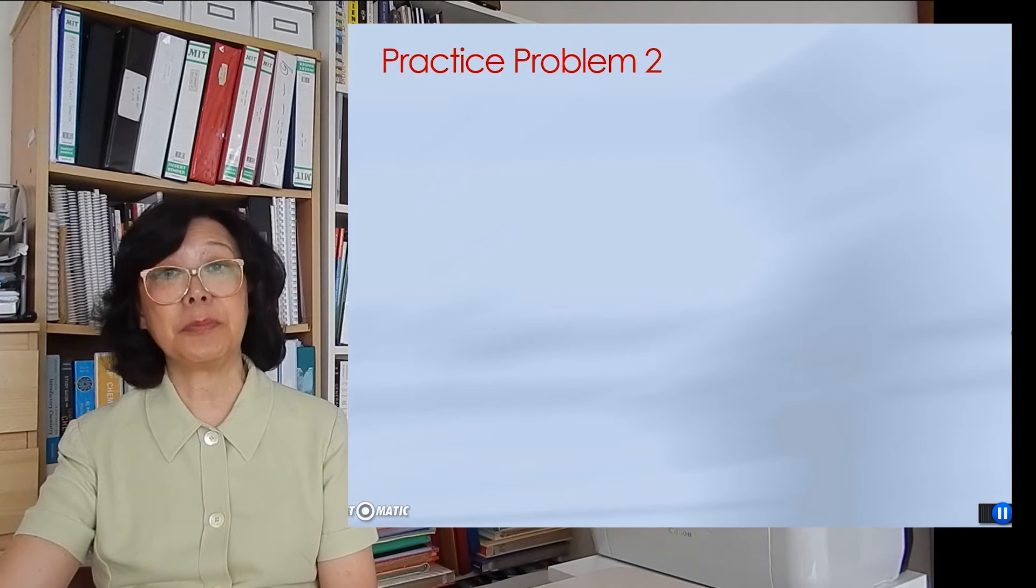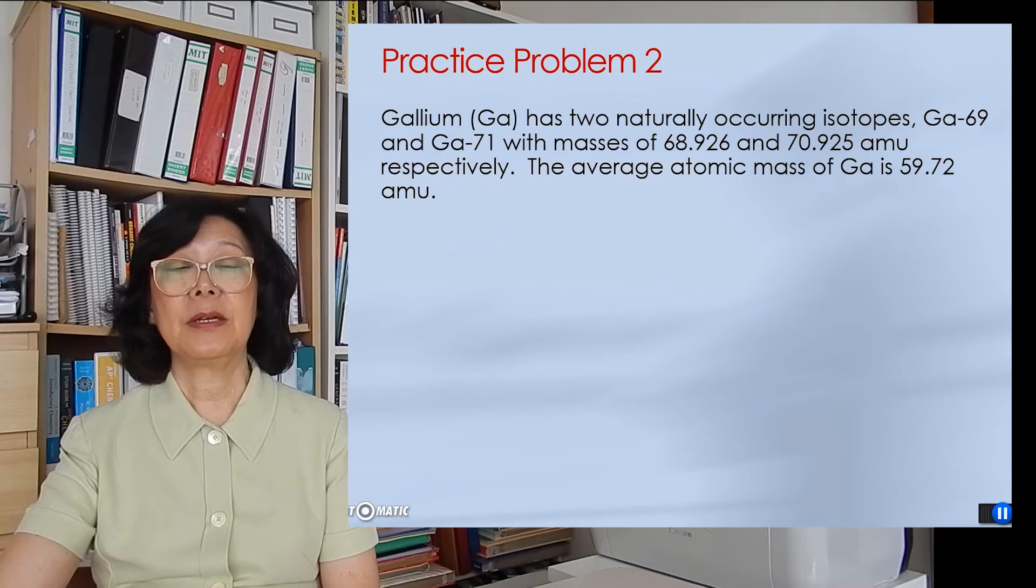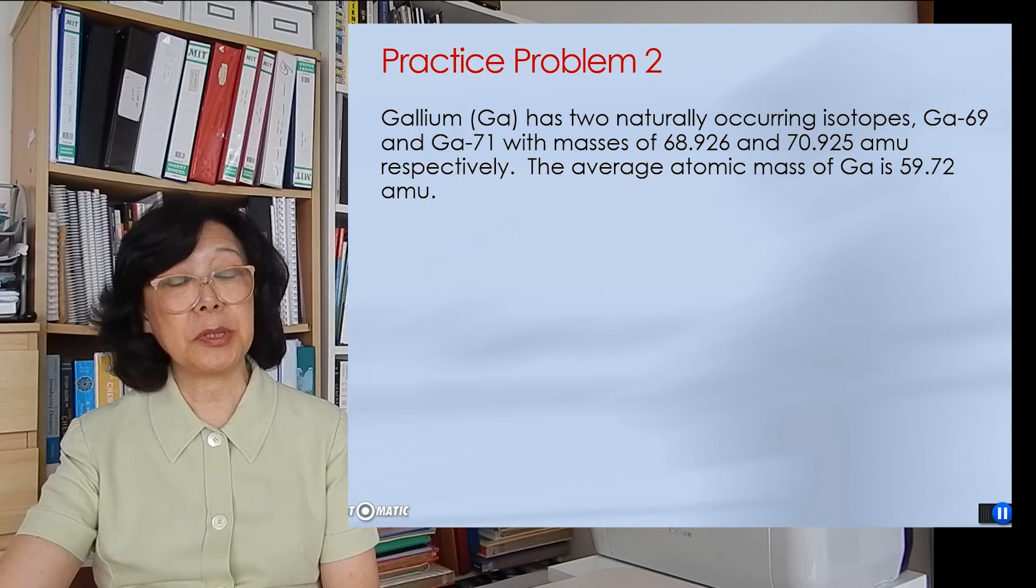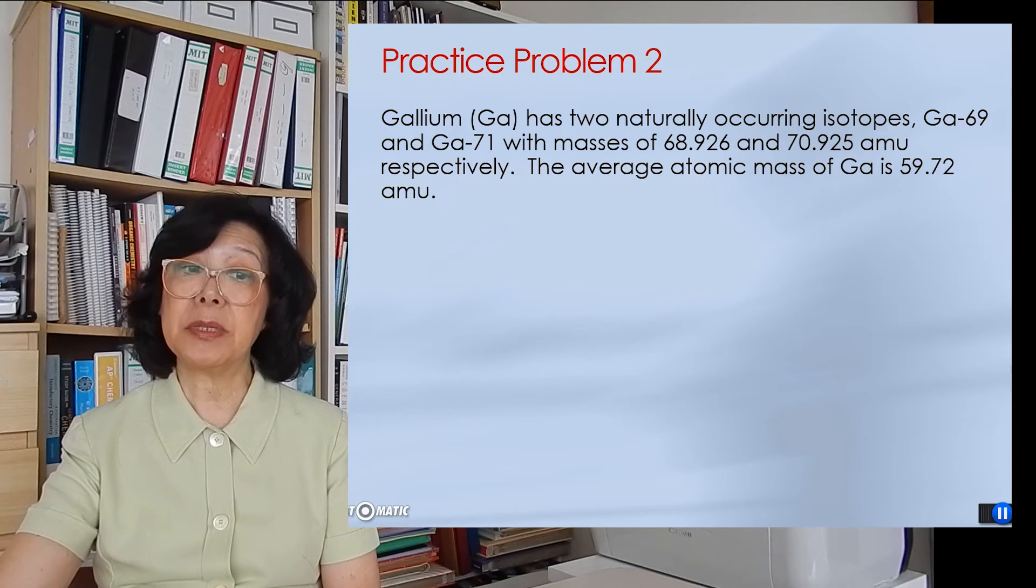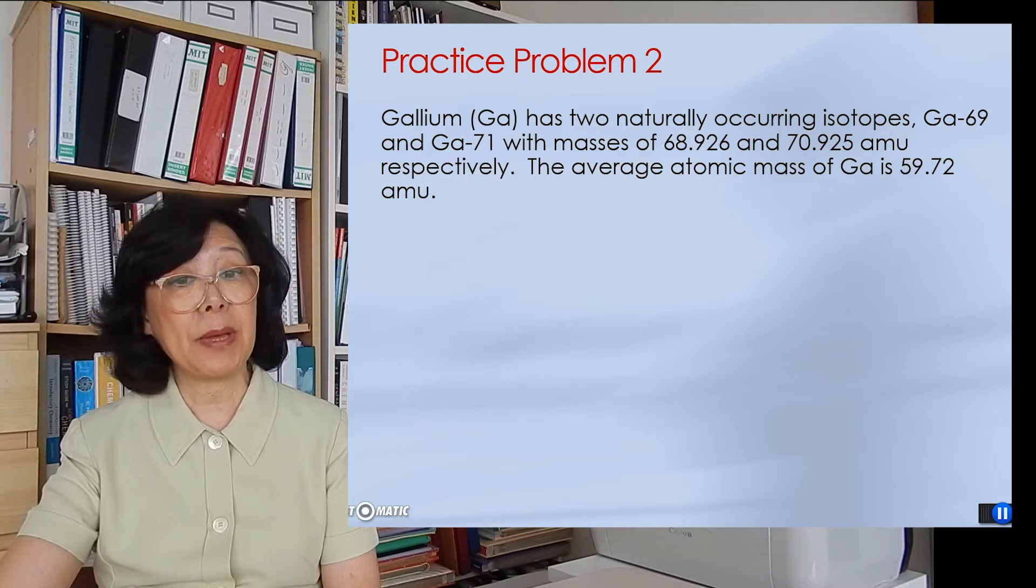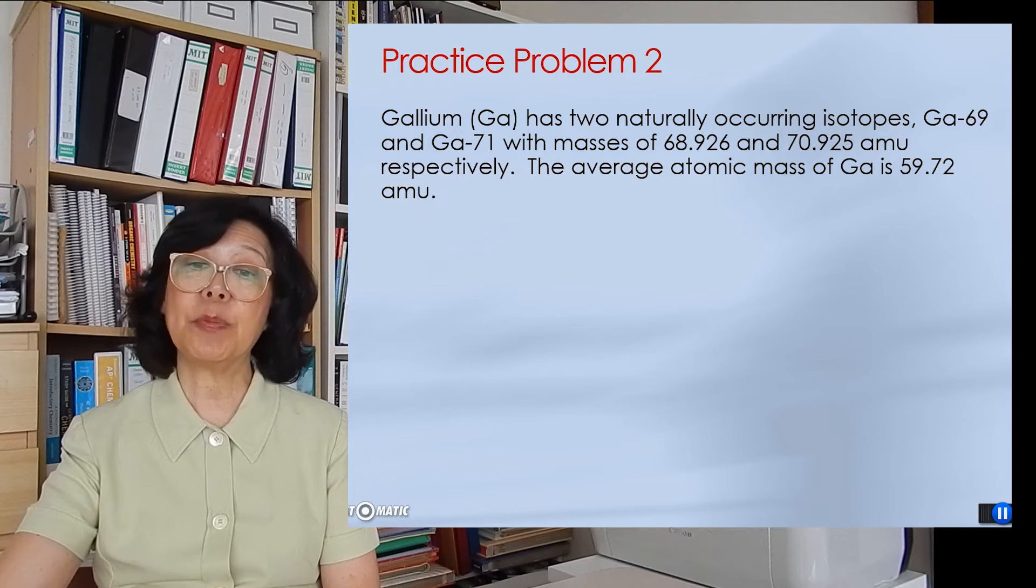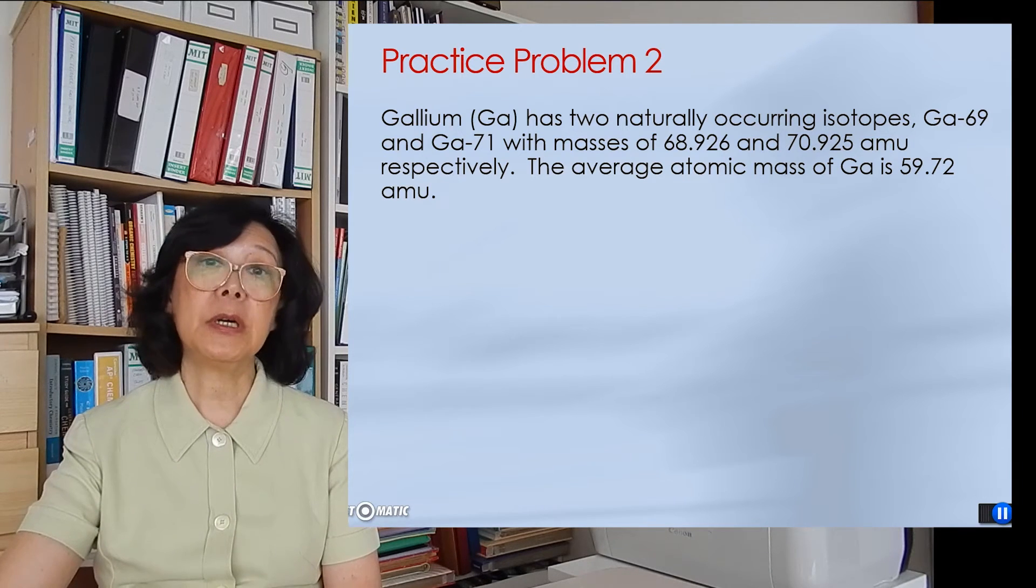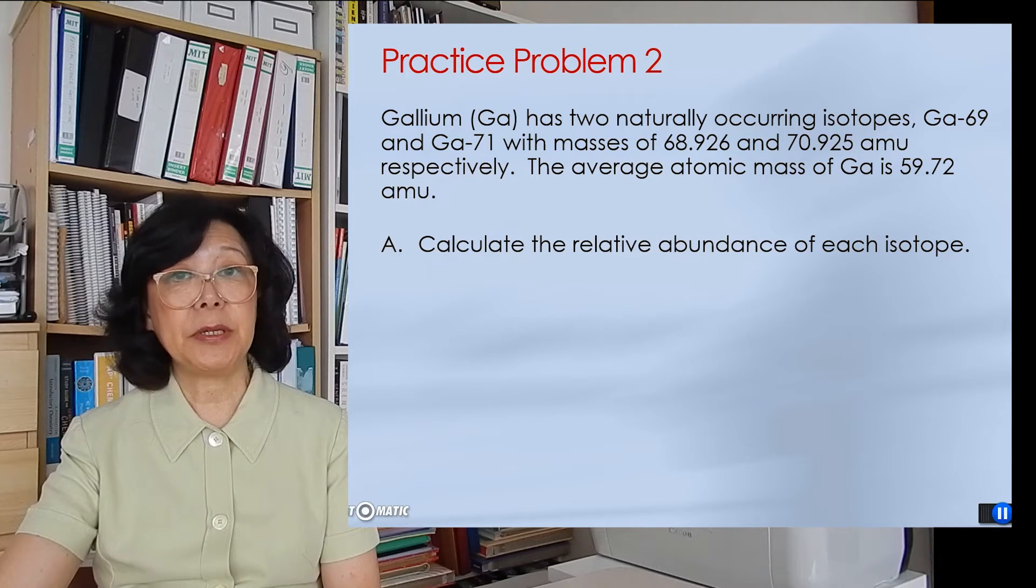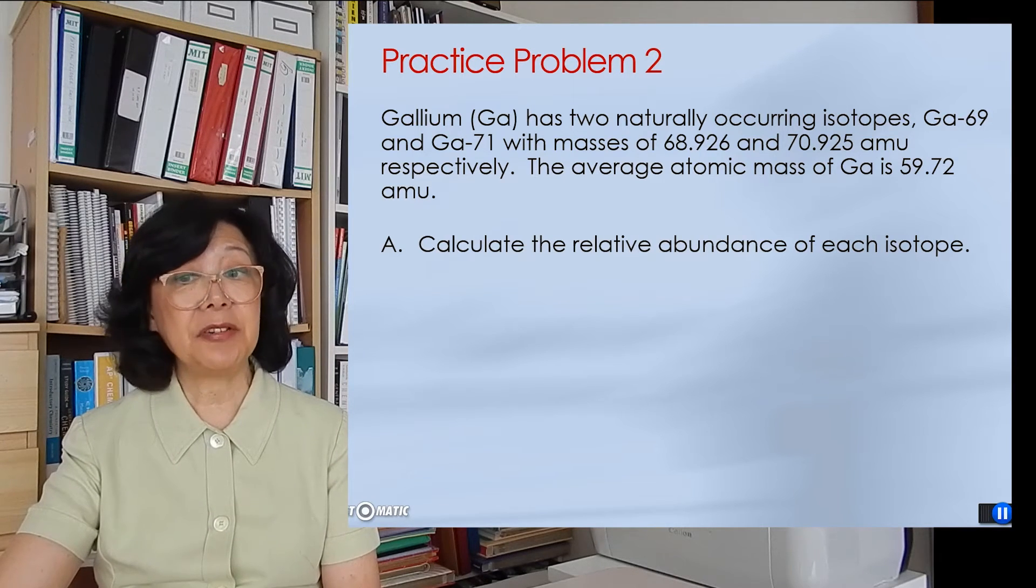Now let's try problem number 2. Gallium has two naturally occurring isotopes, gallium-69 and gallium-71. If we know their individual atomic mass units and the weighted average being 69.72 amu, we can then calculate the relative abundance of each isotope. And here's the way to do it.